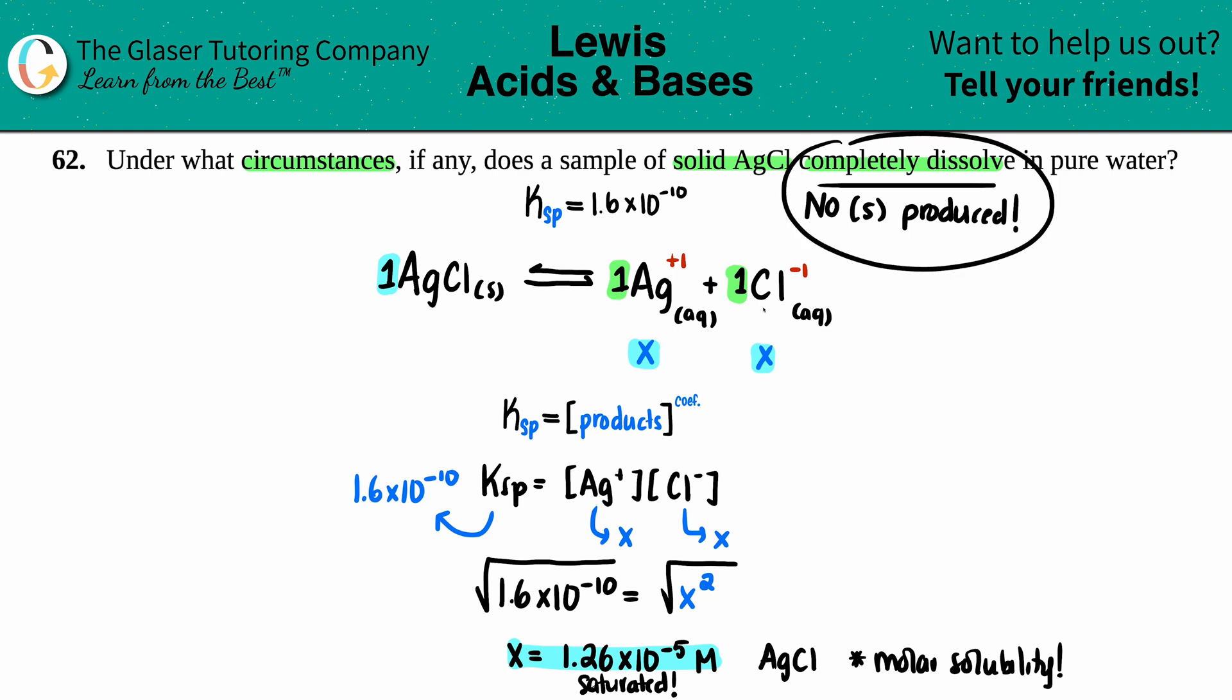So what circumstance, if any, will we have all of our AgCl completely dissolve? The correct answer here is anything below that molar solubility. And in this case the molar solubility, since we actually did the math, is 1.26 times 10 to the negative fifth molarity of the AgCl.